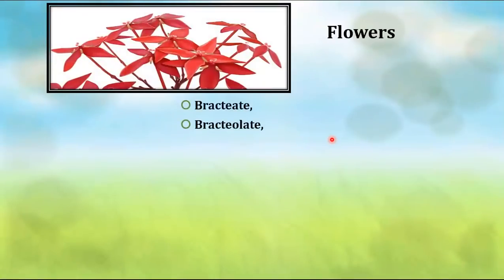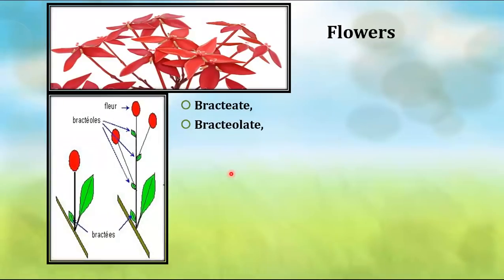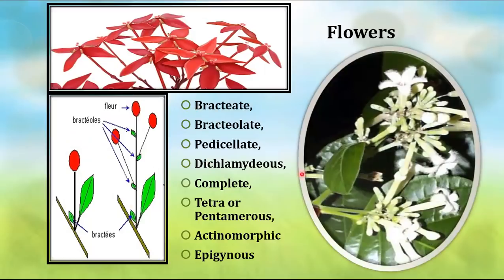The flowers are completely bractate and bracteolate. Bractate means presence of a specialized small structure; bracteolate means a small bract present on the floral axis. Flowers are pedicellate, dichlamydeous — both sepals and petals present — and complete with four whorls. Tetramerous (four petals) or pentamerous (five petals). Actinomorphic — star-shaped, regular — and epigynous, meaning the ovary is inferior with other floral parts above.